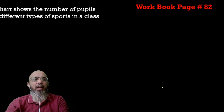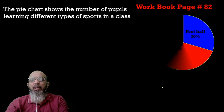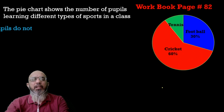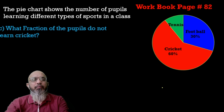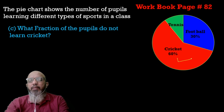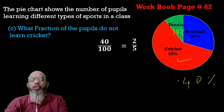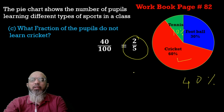Now come to the next question from the same page, page 82. The important question is: what fraction of the people do NOT learn cricket? Sixty percent learn cricket, so the remaining percentage is 10 percent tennis plus 30 percent football, which equals 40 percent. So 40 over 100 — when simplified — gives you 2 over 5.